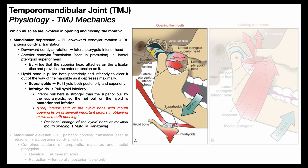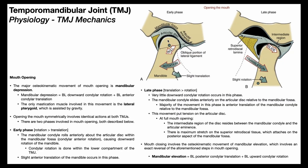The downward mandibular rotation seen in the early phase is controlled mainly by the lateral pterygoid inferior head. The superior head is up here, and the inferior head is where my mouse is. You'll notice that it inserts on the mandibular condyle itself, so this muscle is able to exert a direct pull on the condyle, leading to this anterior roll and overall downward rotation of the mandible.